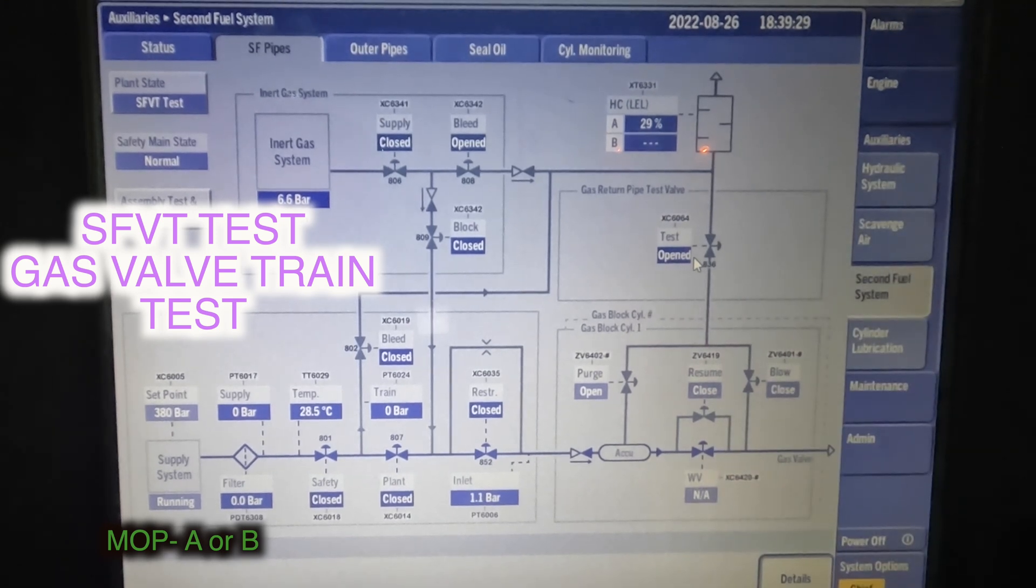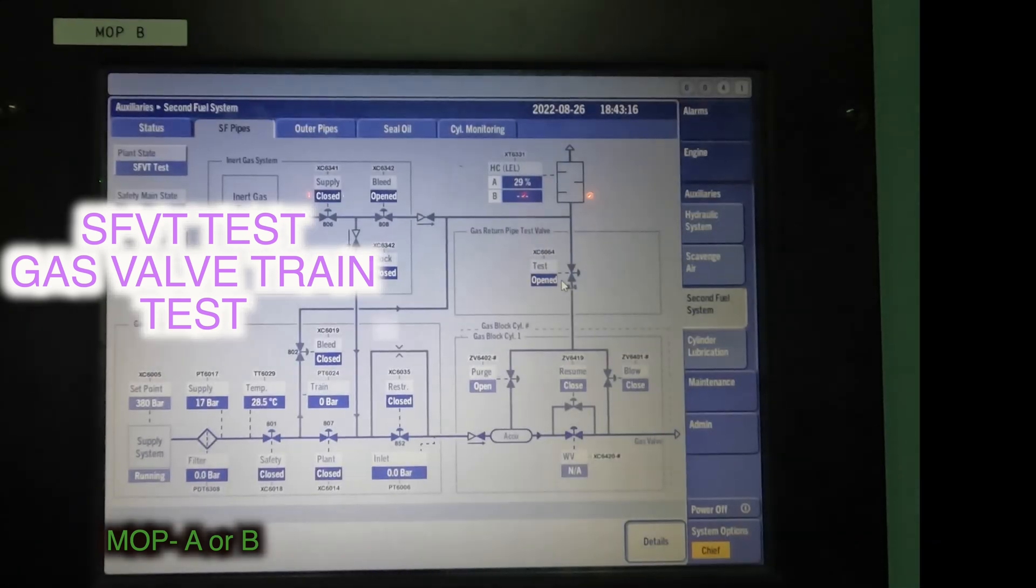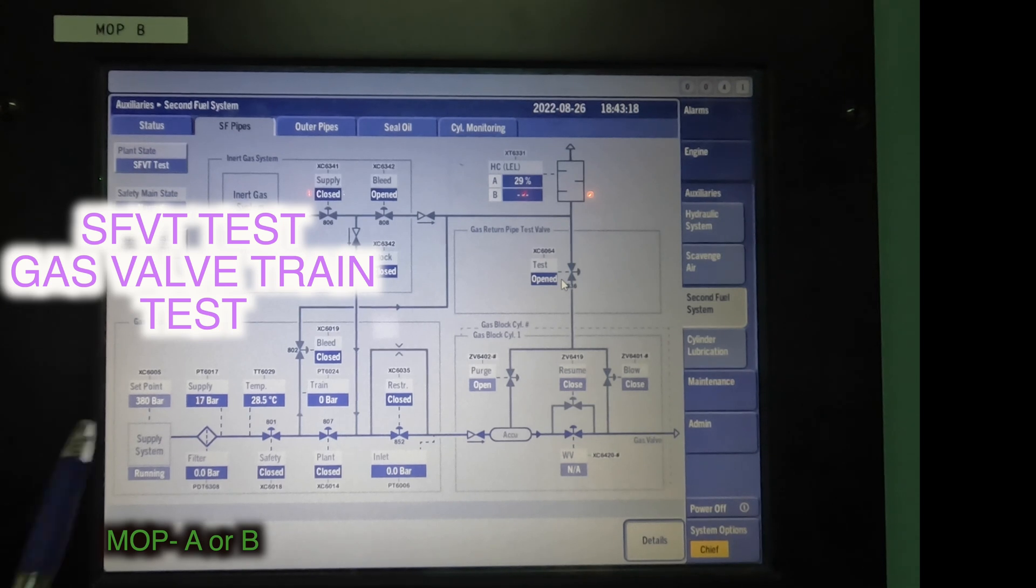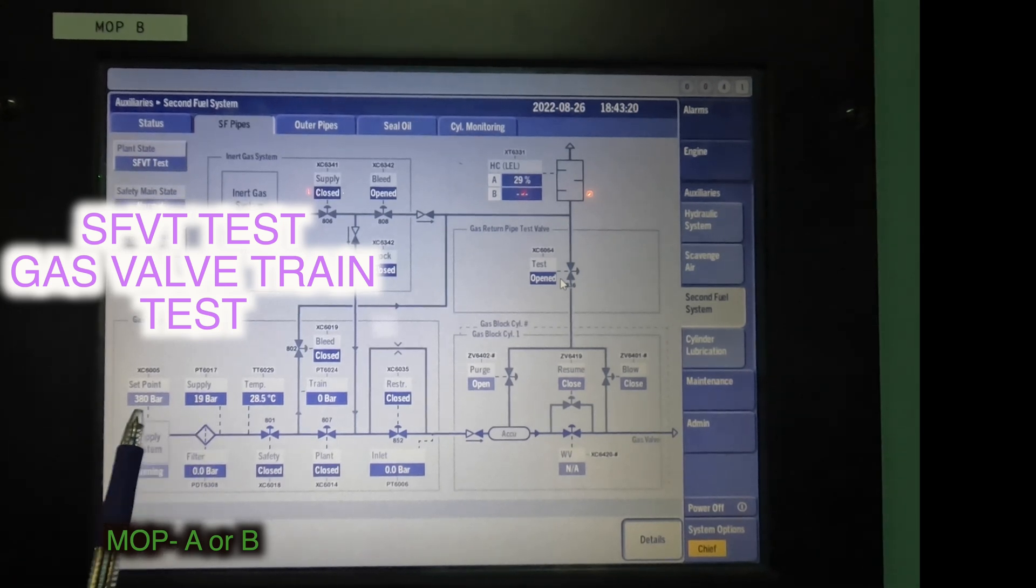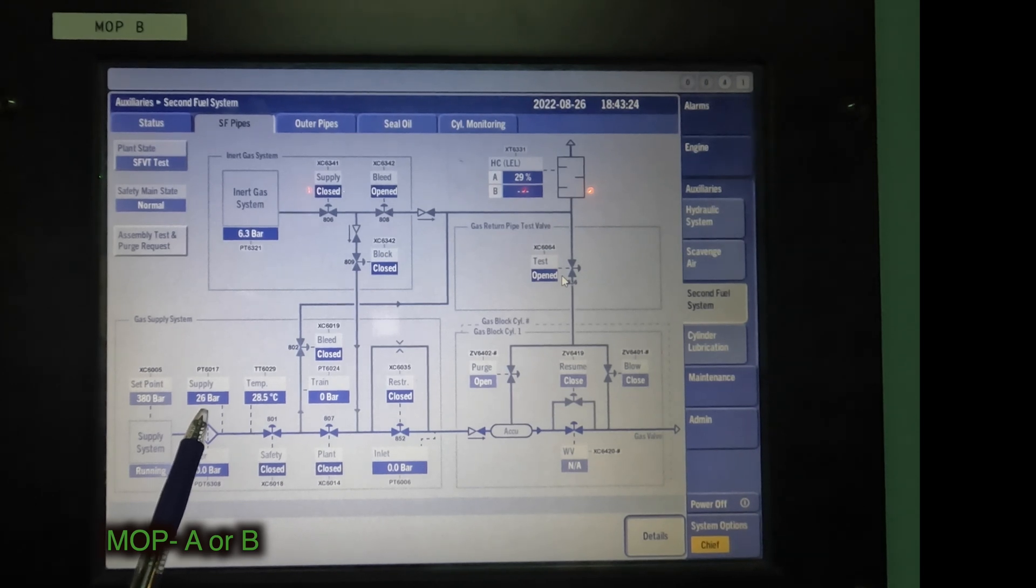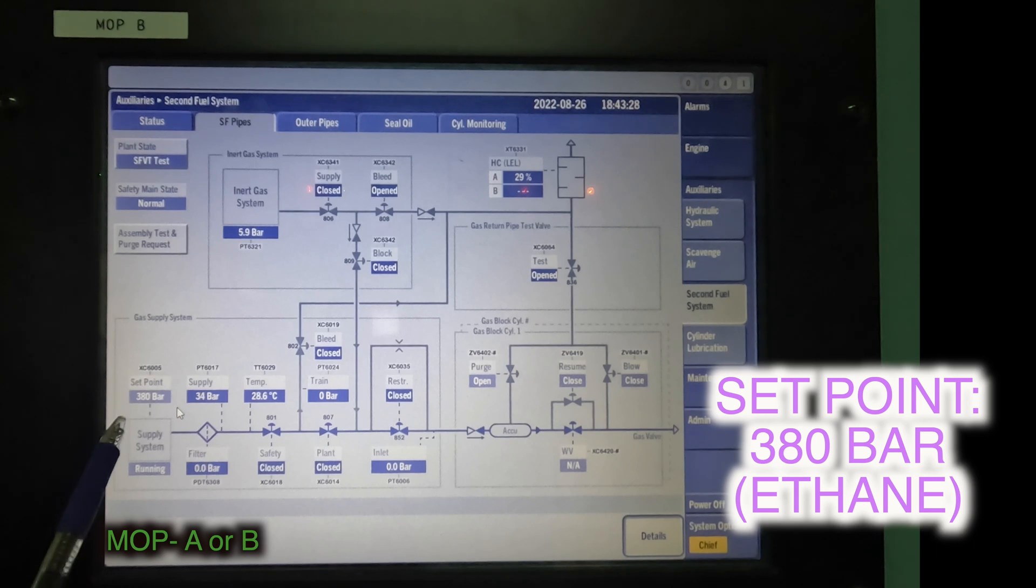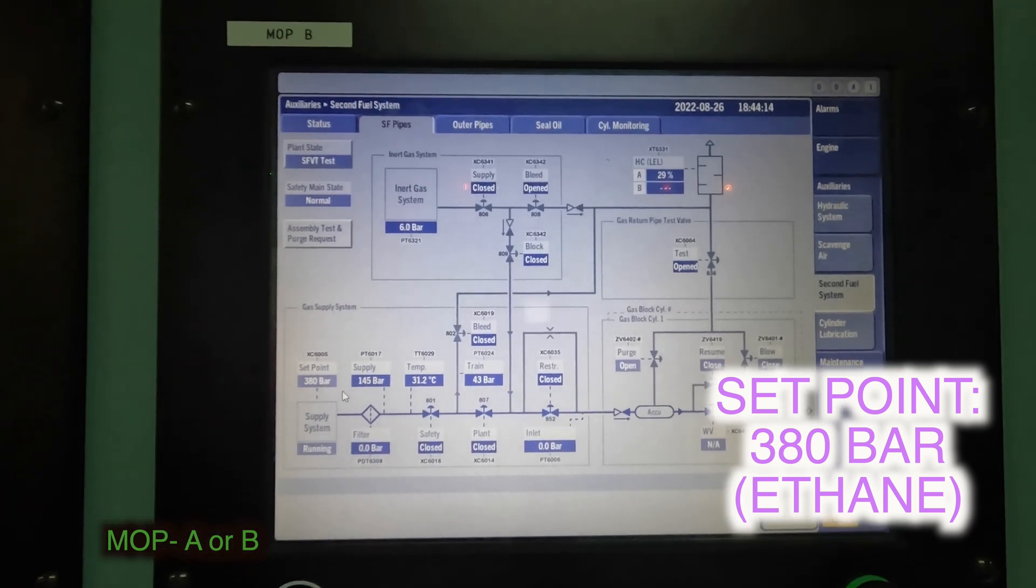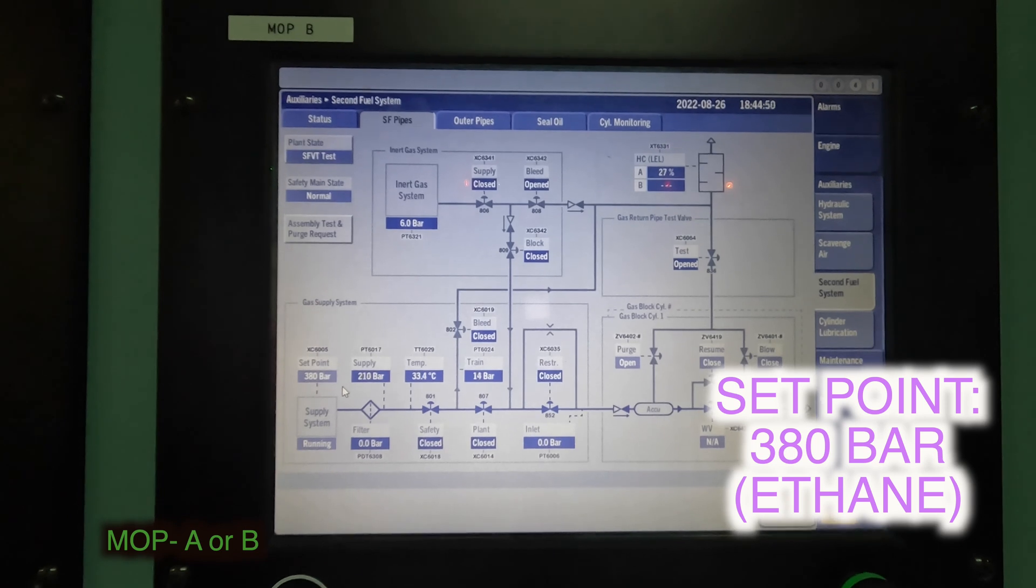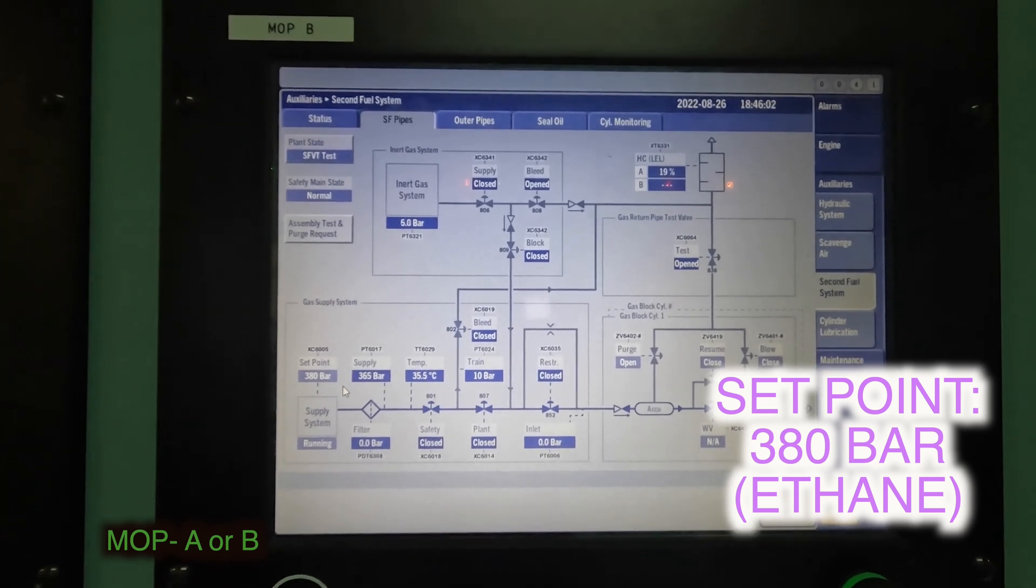Now something called secondary fuel valve test. Now the GVD will undergo a pressure test. Gas engineer, my cargo engineer has confirmed that the pressure is rising. We can also see here that the pressure is 22 bar and going up. This will come to 380 bar. As you can see, the set point is 380 right here. Okay, so let's speed up the process, and I'll speed up the video by about 8x so we can see the pressure building up from 0 bar to about 380 bar.